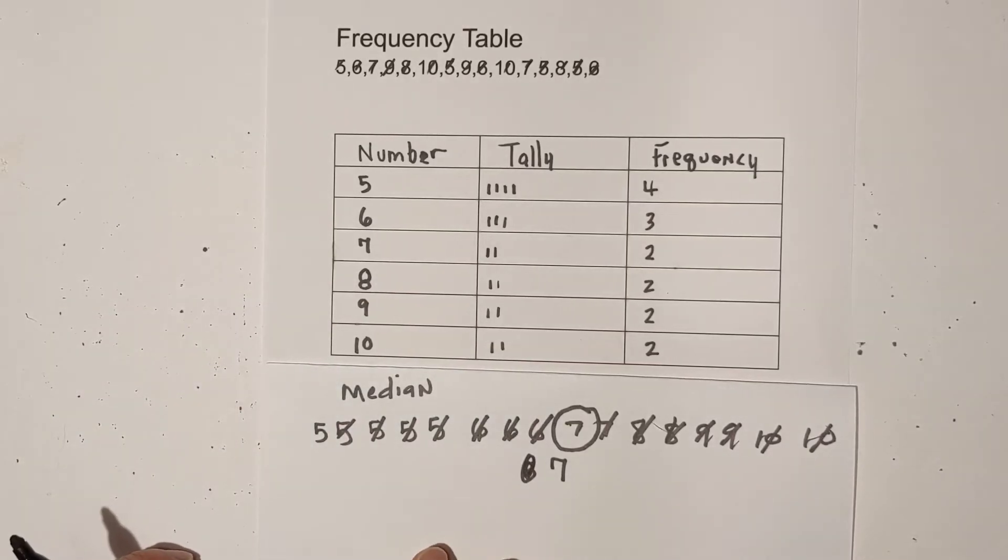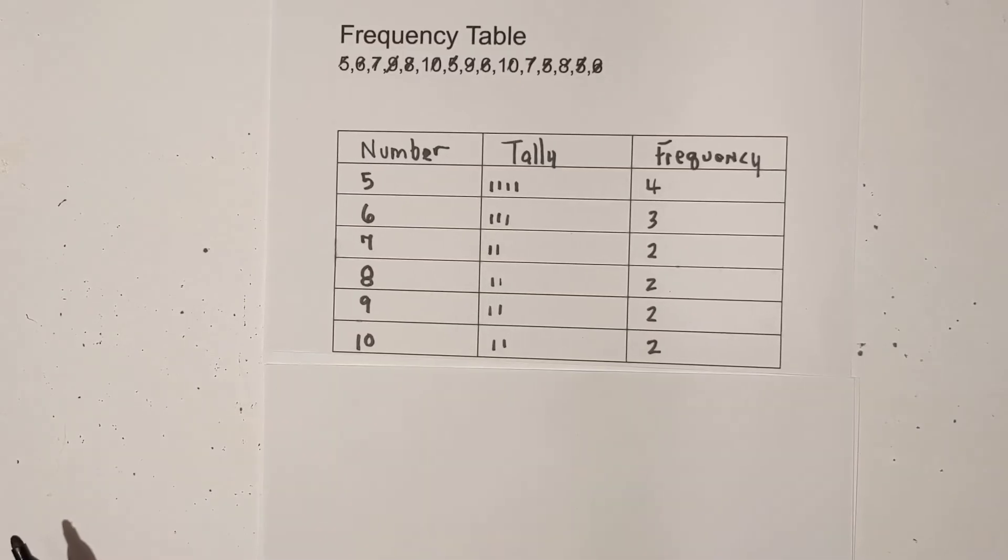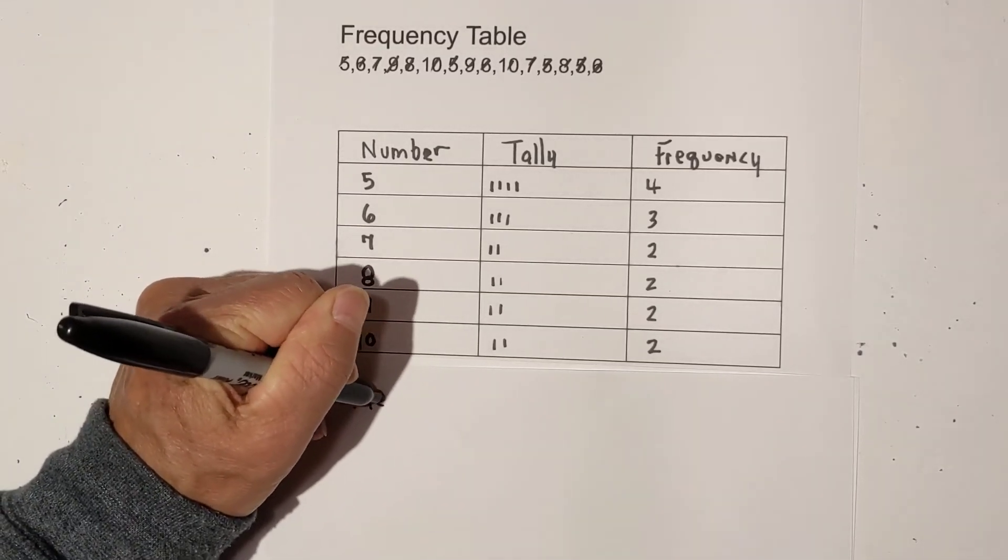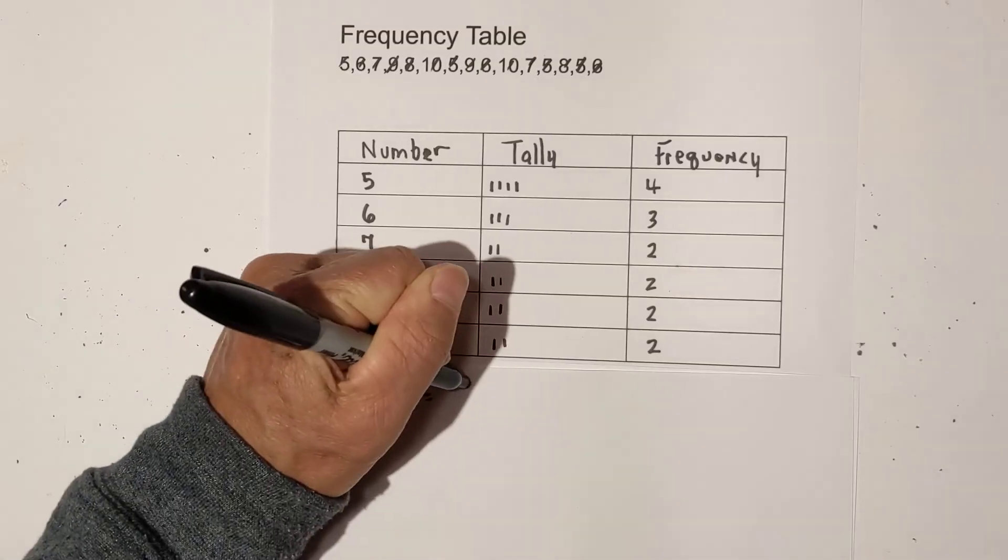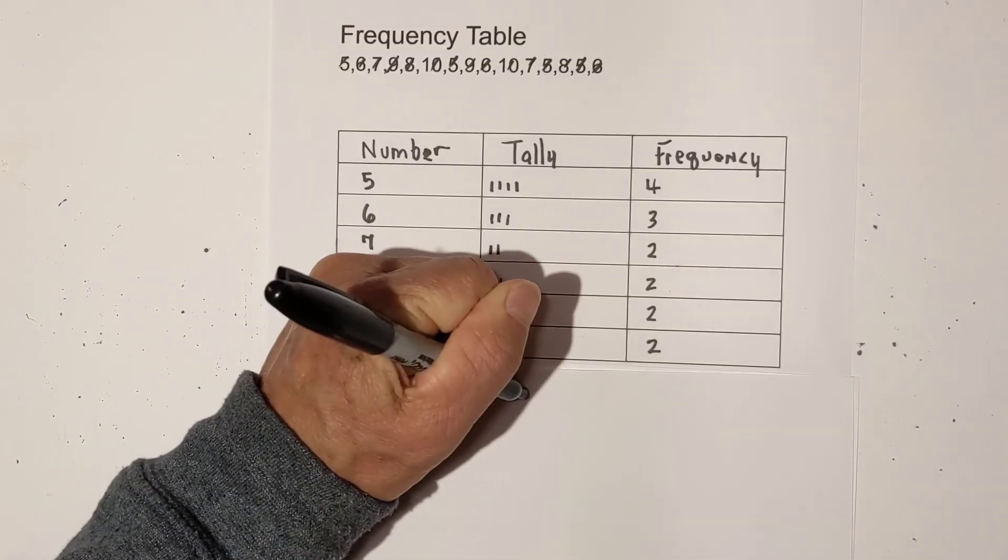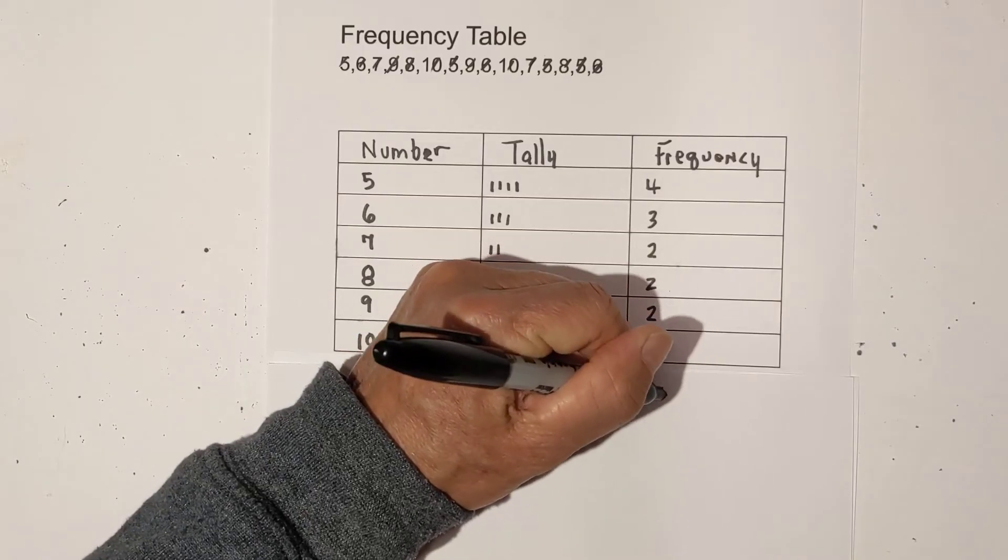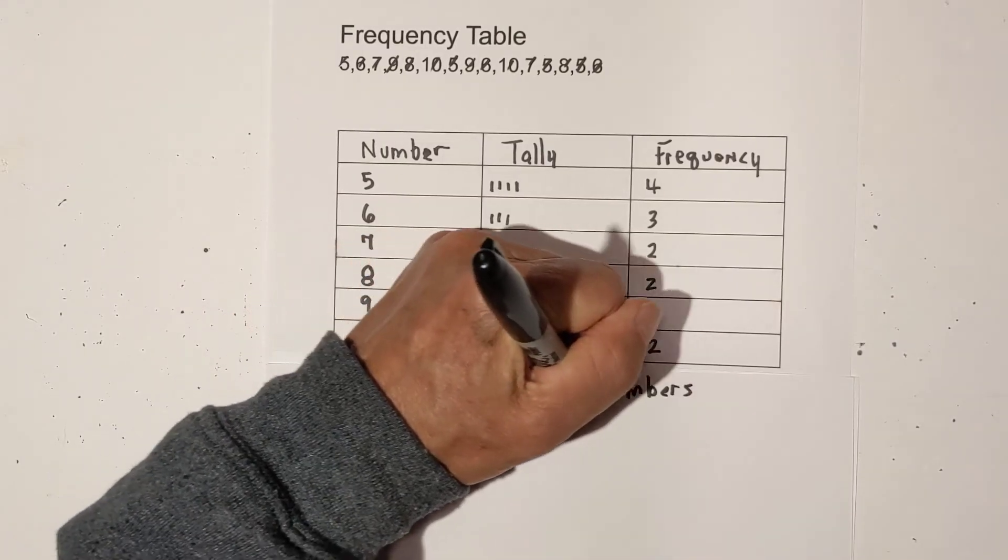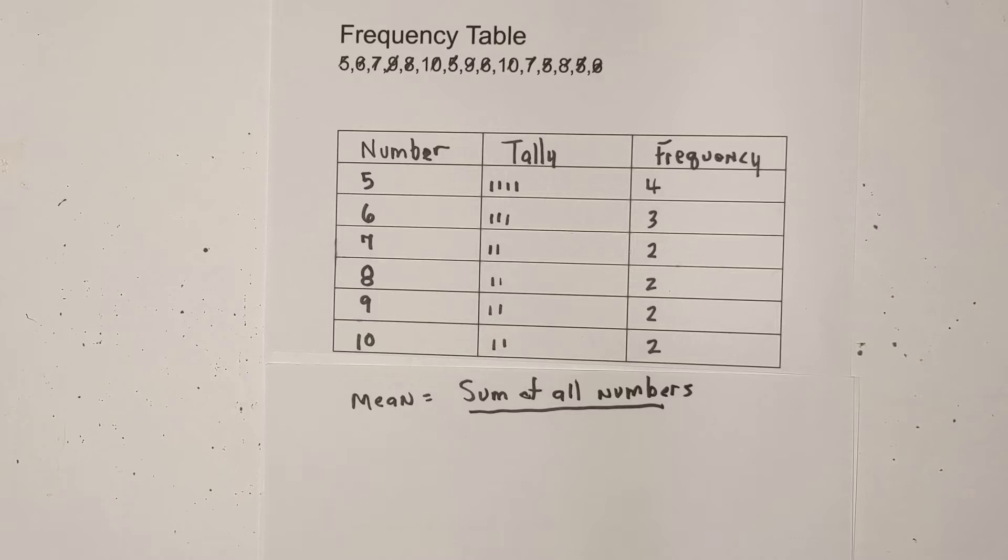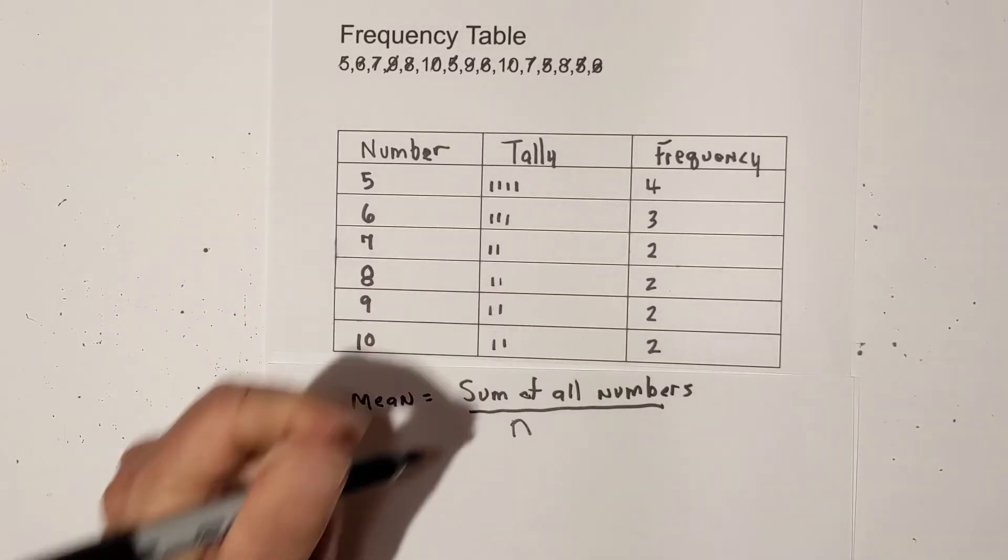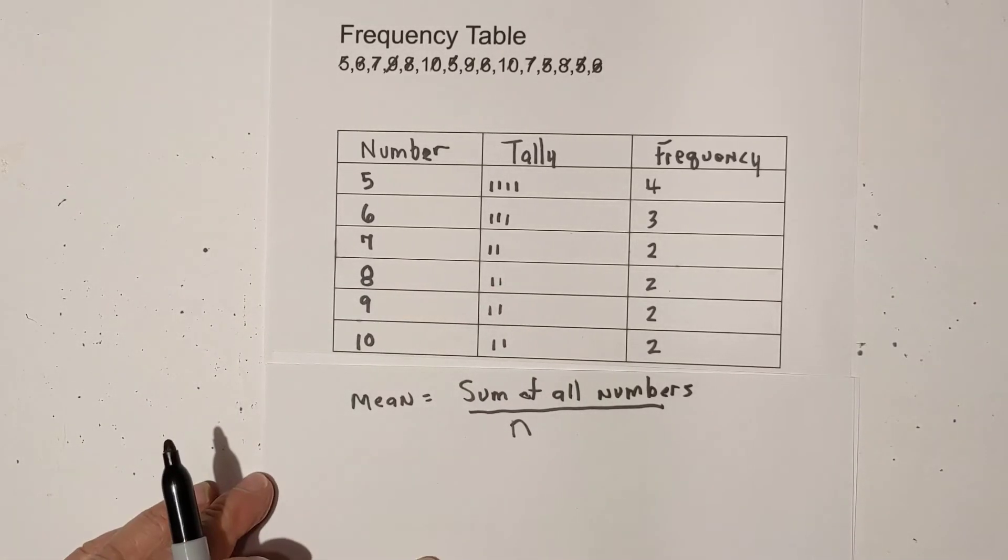Okay, now let's move on to the very last one, and that is going to be the mean. And we'll have to do a little bit of work for that. Now, for your mean, the mean is equal to the sum of all numbers divided by n, which is the total of how many numbers you have in the data set.